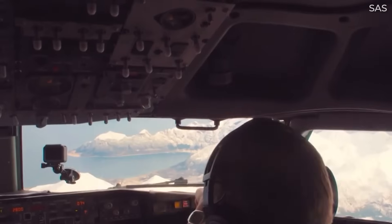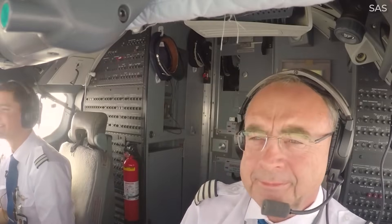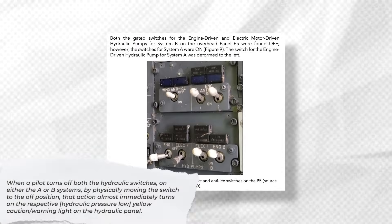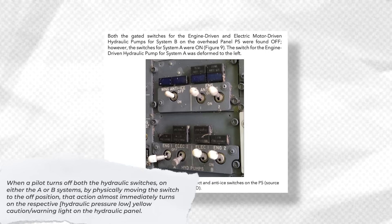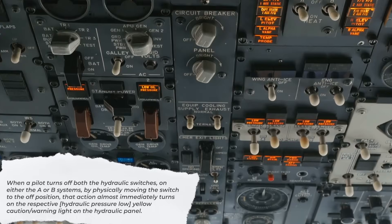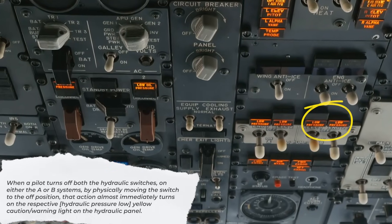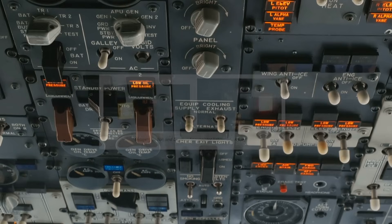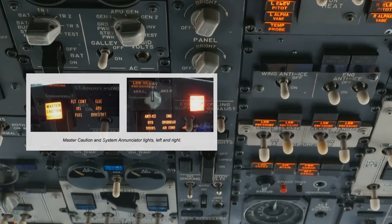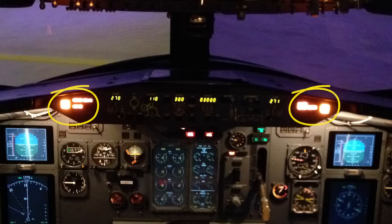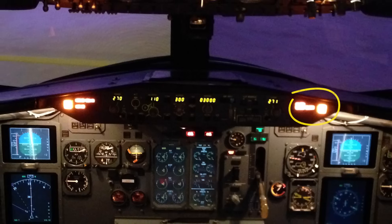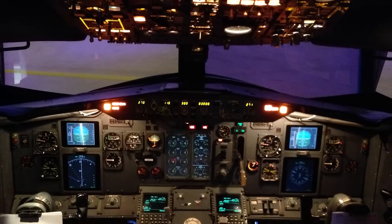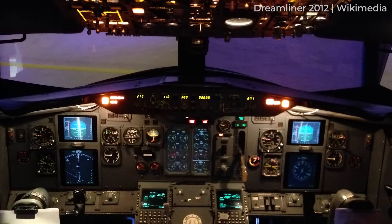That is why such functions exist in the cockpit. But there is a safeguard if the system is disabled accidentally: the master caution warning lights. When a pilot turns off both the hydraulic switches on either the A or B systems by physically moving the switch to the off position, that action almost immediately turns on the respective hydraulic pressure-low yellow caution/warning light on the hydraulic panel. Because the hydraulic panel is located on the overhead panel above the pilots' heads and out of the direct line of sight, it also immediately illuminates the two yellow master caution lights located directly in front of each pilot on the glareshield. Master caution warning lights are intended to immediately alert the pilots of a detected system abnormality, and they are nearly impossible to miss when illuminated. Again, in the Swift Air incident, pilots appeared to reflexively silence these warnings.